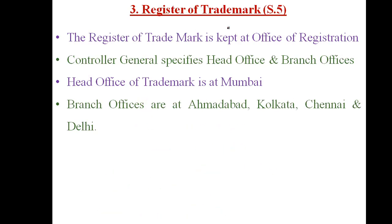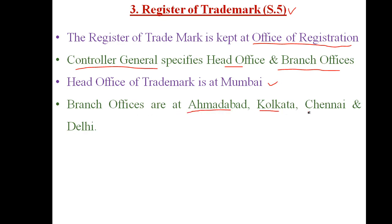According to Section 5, the register of trademark is kept at the office of registration. The controller general specifies the head office and branch offices of trademark. The head office of trademark is at Mumbai and branch offices are at Ahmedabad, Kolkata, Chennai, and Delhi. This register is where all details of registered trademarks are entered.